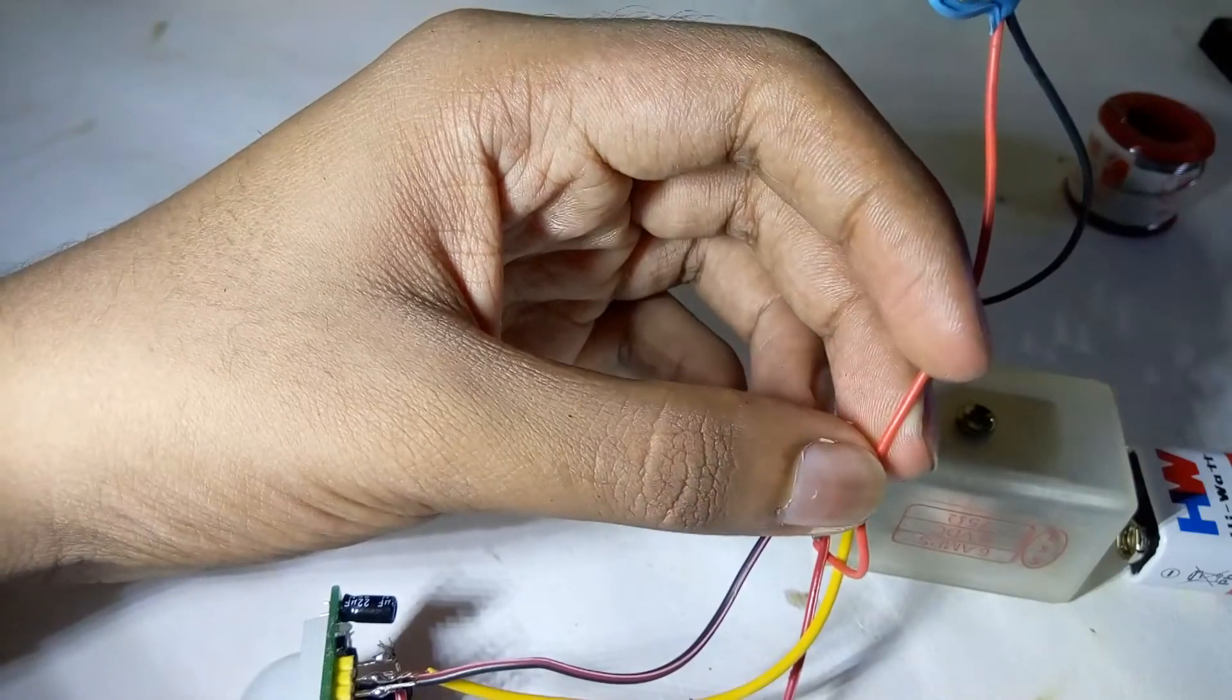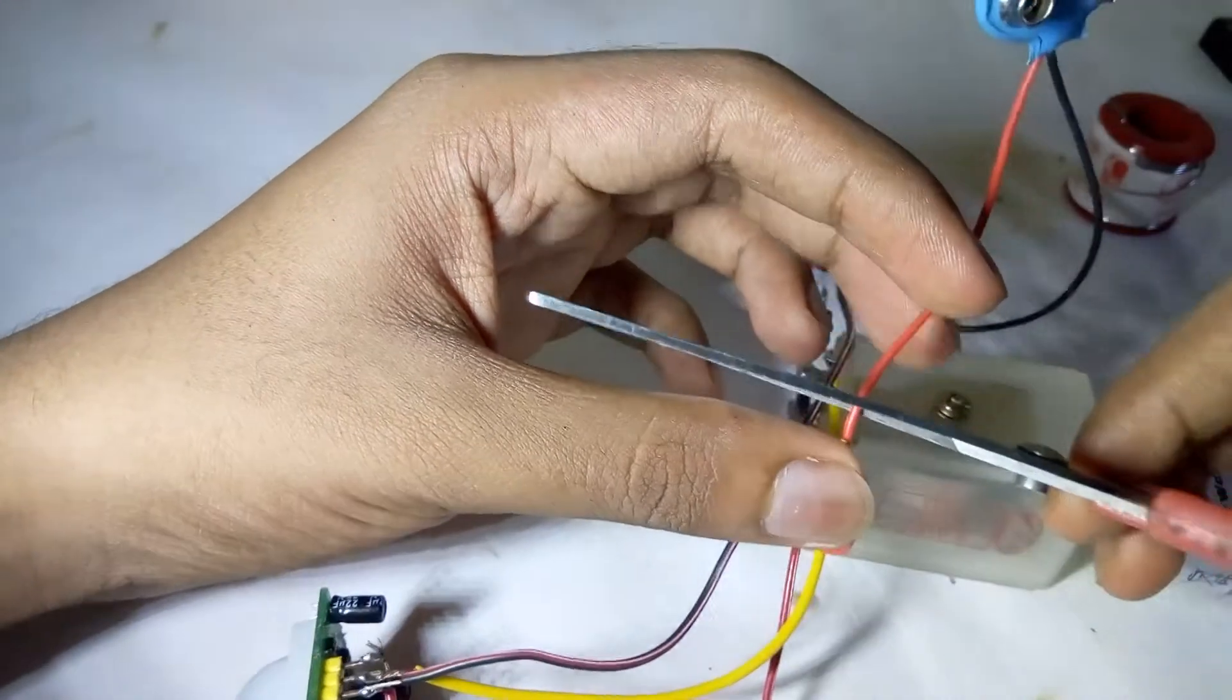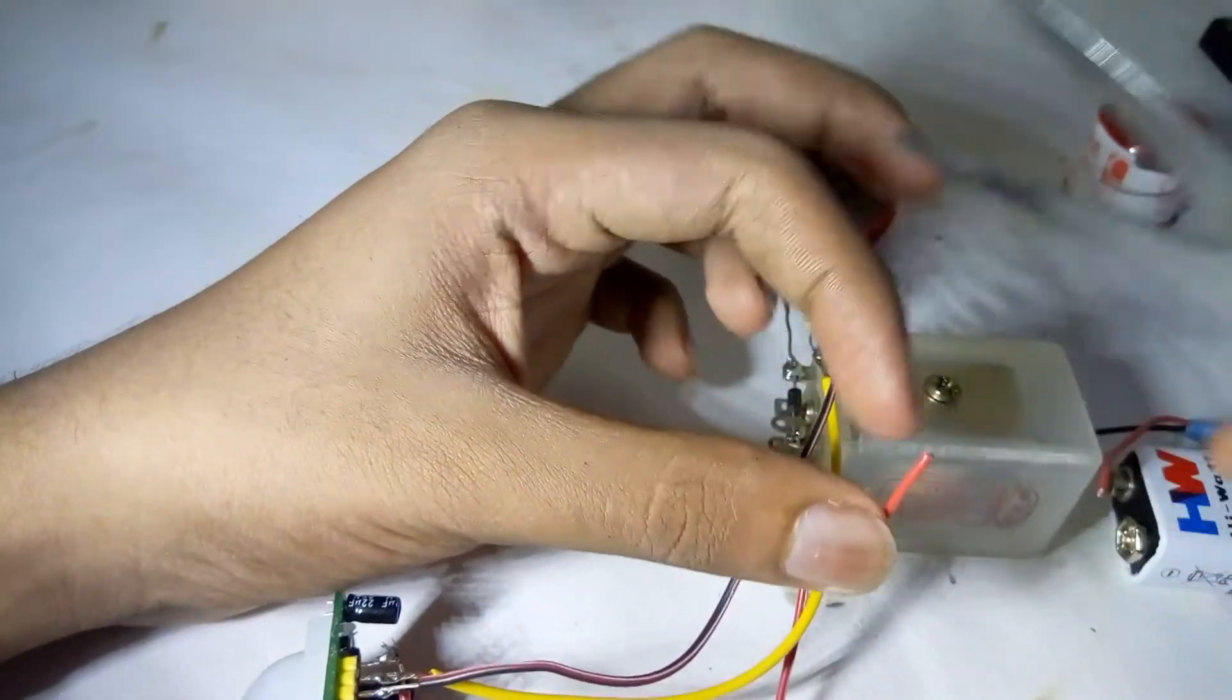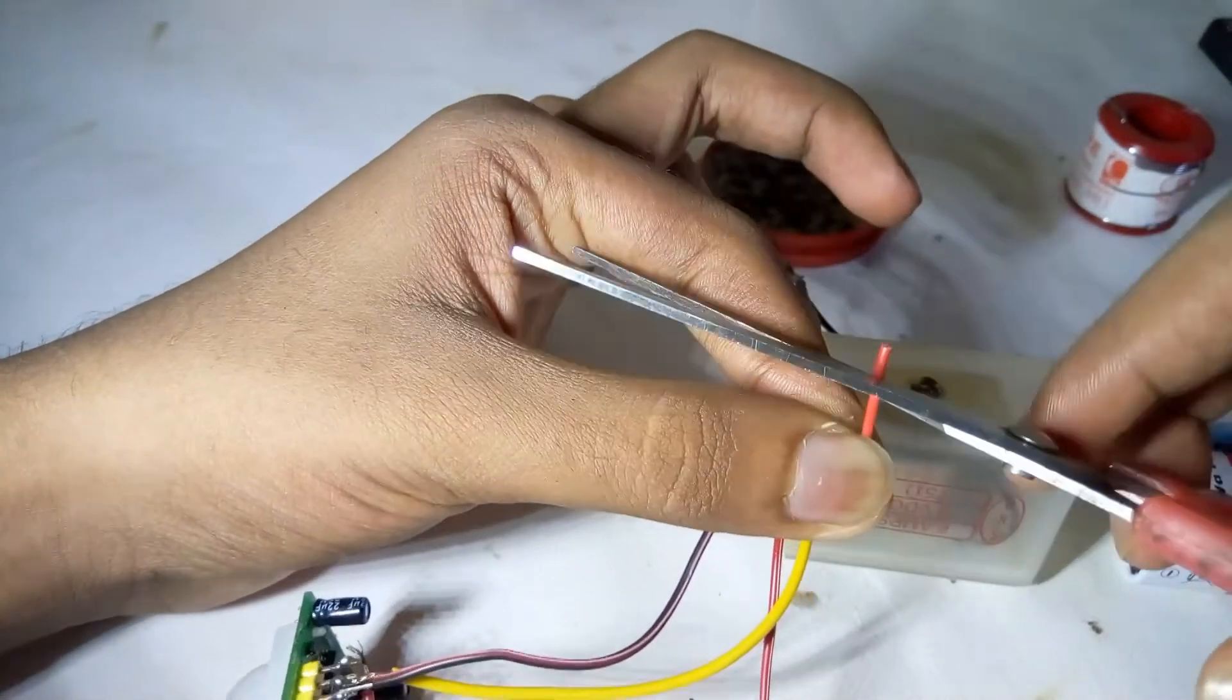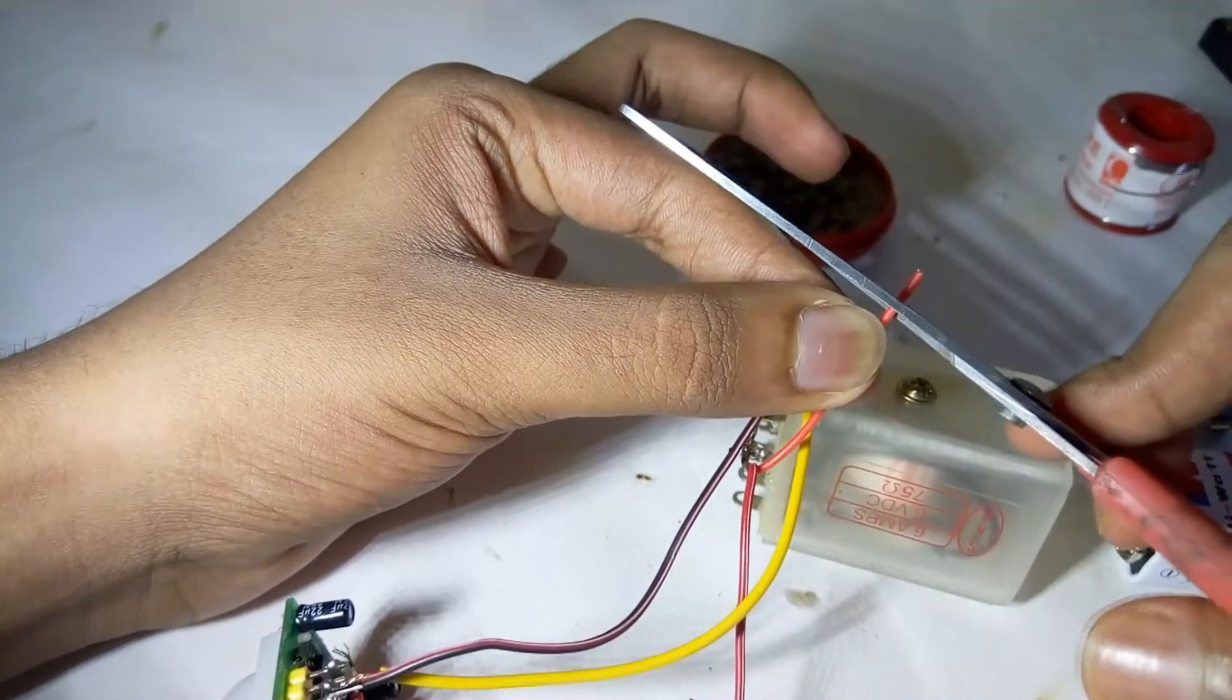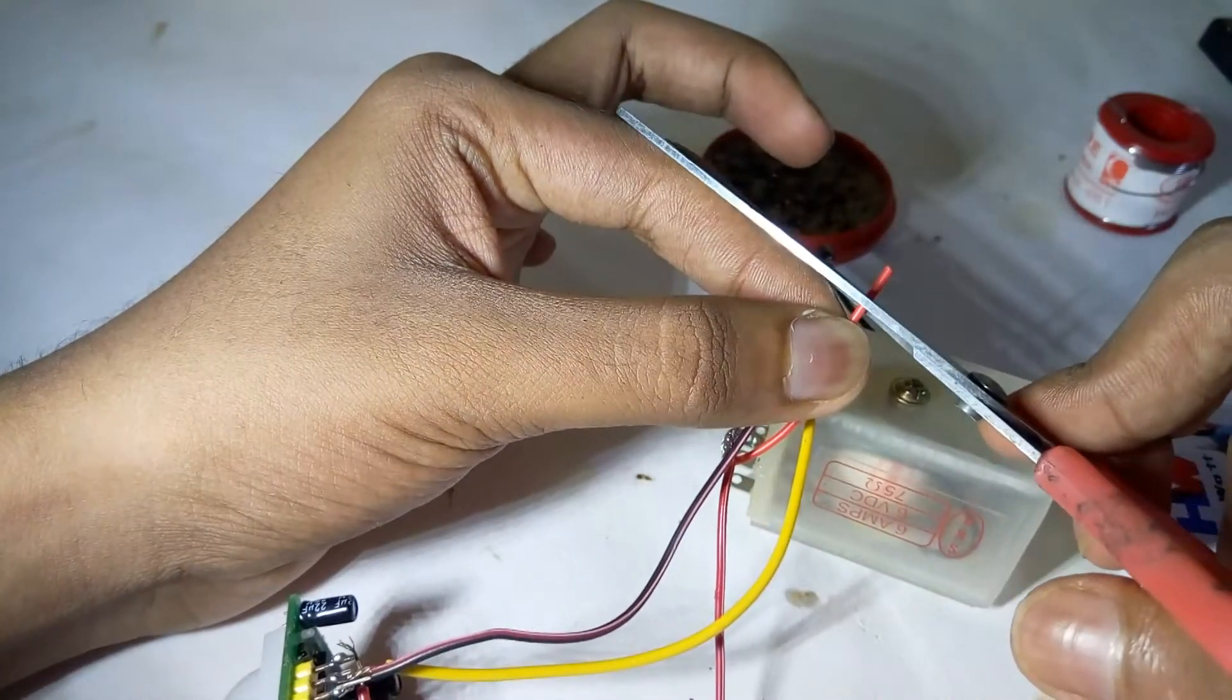Now I am going to attach the switch, which I forgot. I am going to cut the positive wiring which I have soldered and connect the switch as shown in the circuit. The switch is optional. If you want, you can connect it, or else you can just unplug the battery adapter.